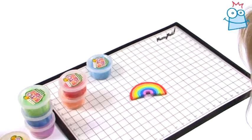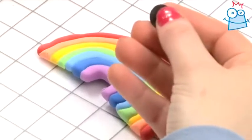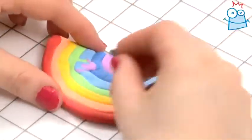Now, you'll need to leave your rainbow to dry so that it can harden like this one. Take a self-adhesive magnet, peel off the backing, and pop it onto the back of the rainbow.